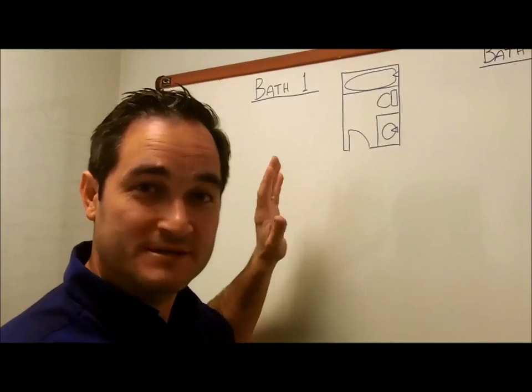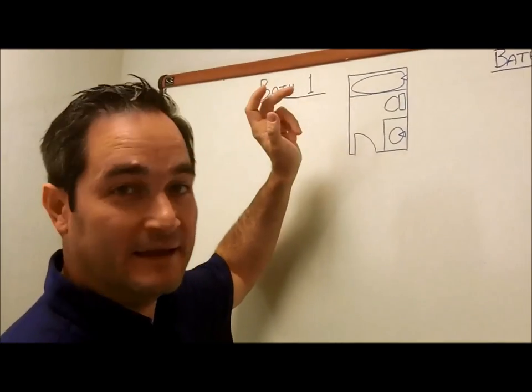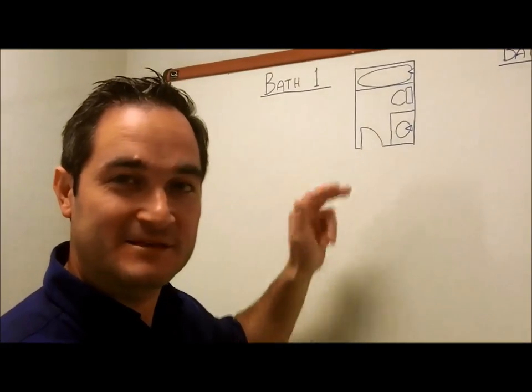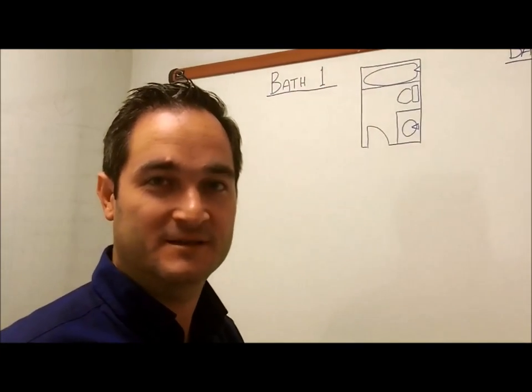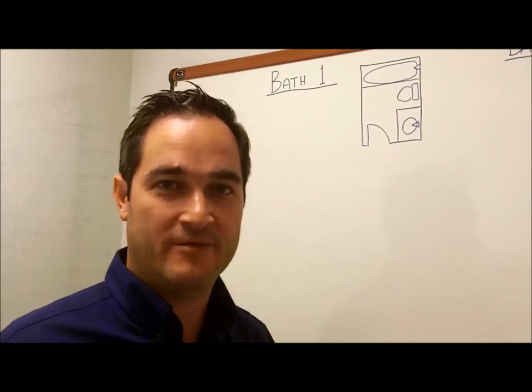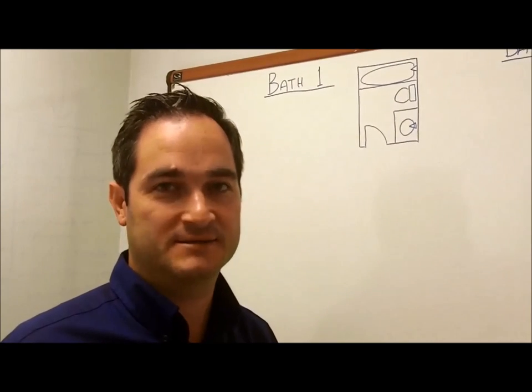This first bathroom is about as straightforward as you can get. It's got a tub, a toilet, and a single vanity with a single faucet. It's a five foot by eight foot bathroom—you've seen them in a hundred houses—and I want to go through the process that I gave you for how to budget a bathroom.